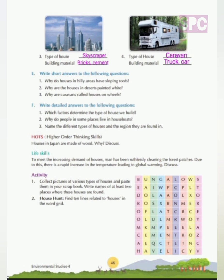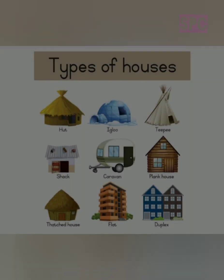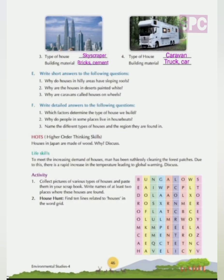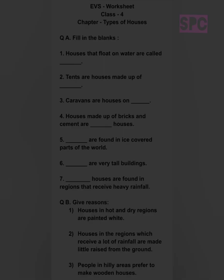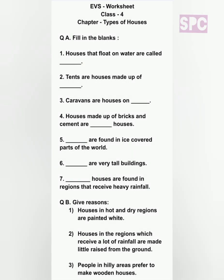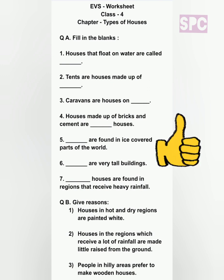Activity: Collect pictures of various types of houses and paste them in your scrapbook. Write names of at least two places where these houses are found. Activity 2, House Hunt: Find ten words related to houses in the word grid. Some words you can find include bungalow, flat, and bedroom — find the rest yourself. I am also providing a worksheet for extra practice. The explanation of this entire chapter is done. Hope you learned something new today. If you liked the video, give a thumbs up, and if you have any doubts, write them in the comment section.